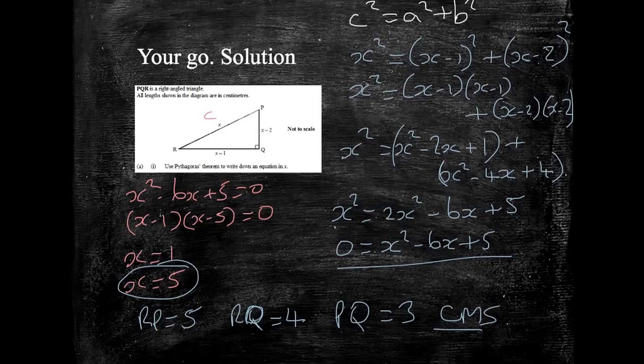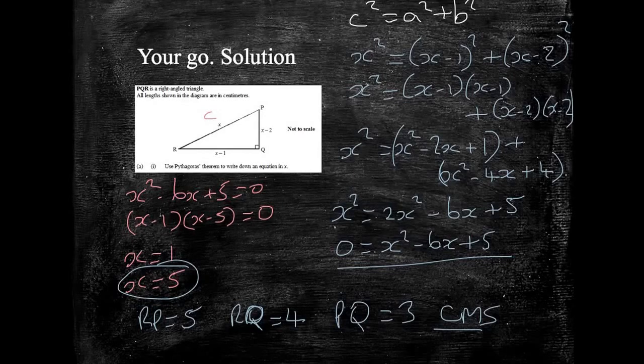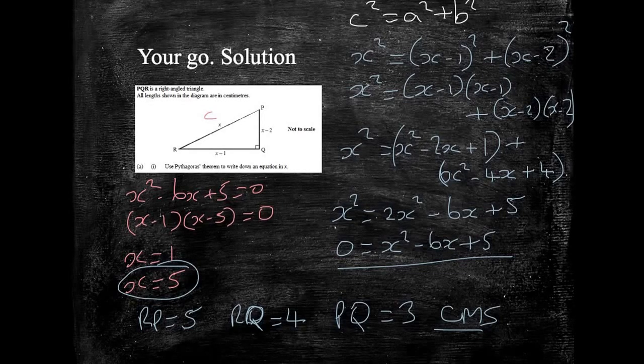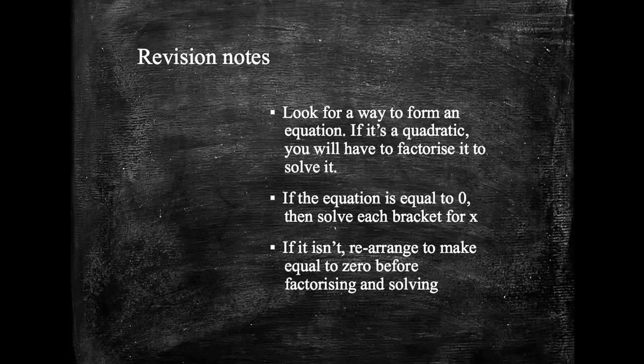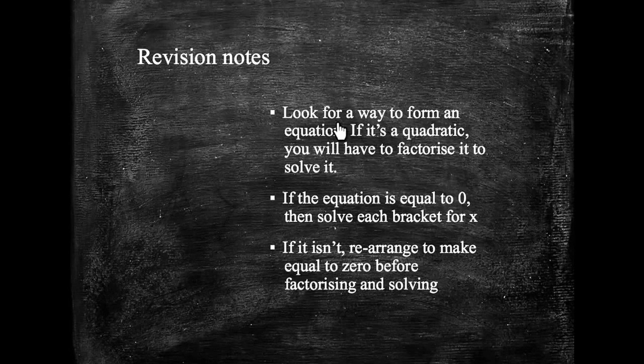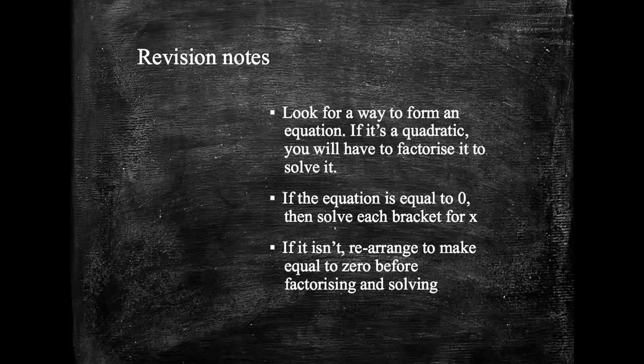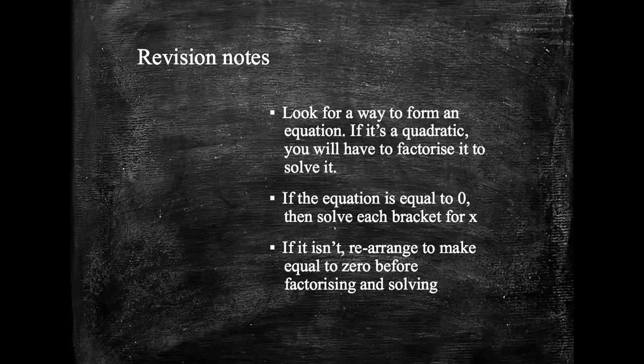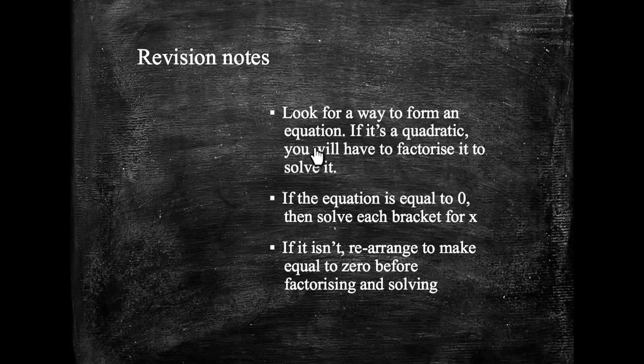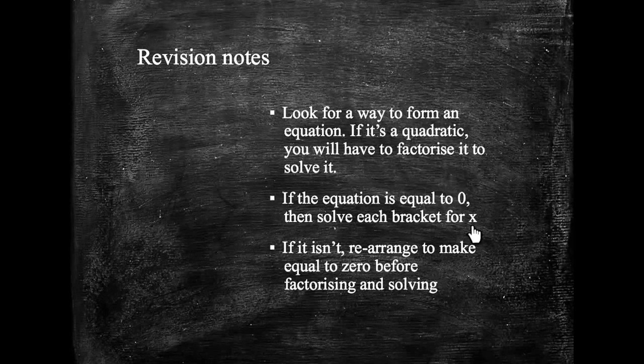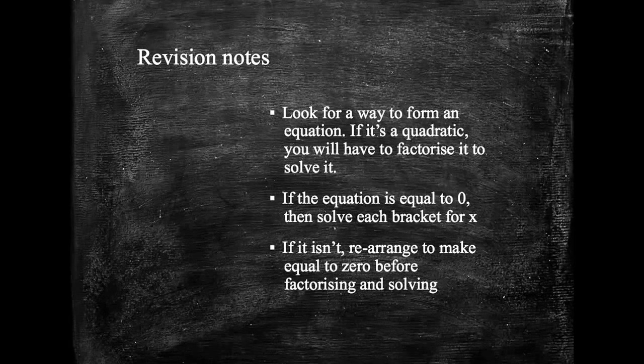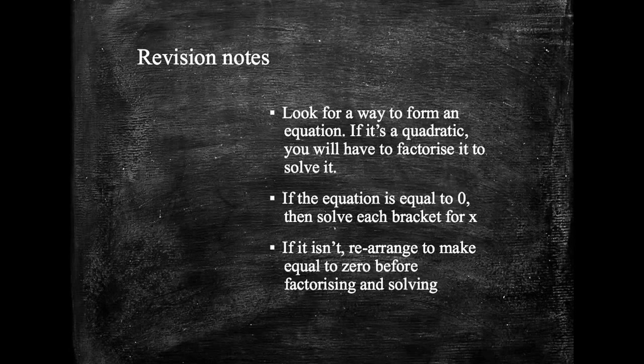If you've got this far really well done, this is a good 6 marks, if not 7 for doing a question like this. There's a lot of things that need to be done, a lot of reasoning, a lot of understanding. If you've been making revision notes, look for a way to form an equation. Whenever you've got these wordy sorts of questions, or a picture that you're not quite sure what to do, see if you can form some sort of algebraic equation. If it turns out to be quadratic, we're going to have to factorise it first. If the equation's already equal to 0, then solve each bracket for x. If it isn't, rearrange it to make it equal to 0.